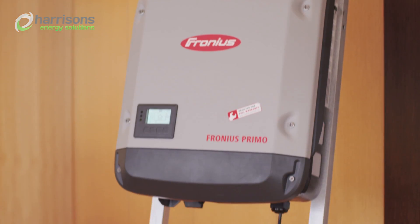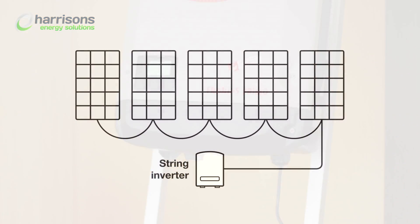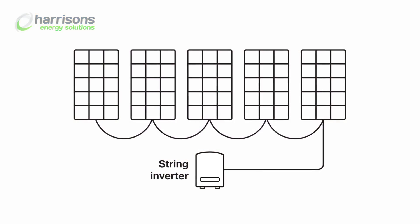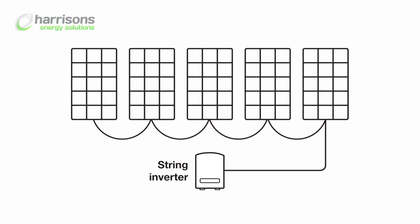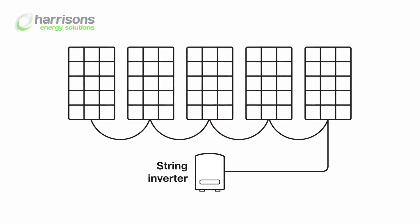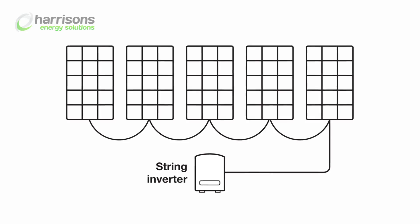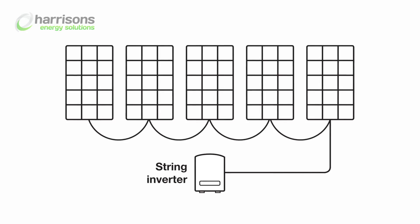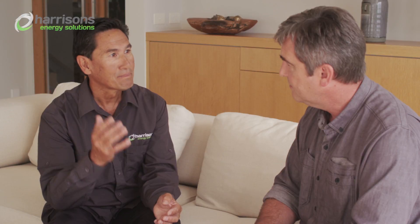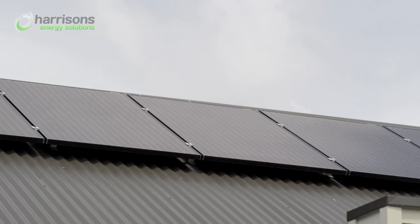String inverters are where all the panels are wired in series on the roof, just like a Christmas tree light. They're not individually optimised, which means that if one panel goes down, they all go down — similar to, again, your Christmas tree lights.